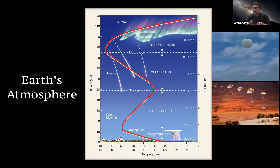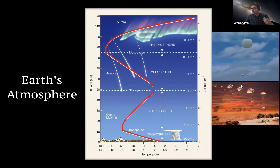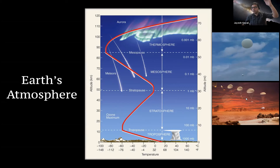For Earth, we have the luxury of launching radiosondes — attaching an instrument that gets direct measurements of the atmosphere. For solar system planets, like Titan with the Huygens mission, we can launch a spacecraft and drop a probe into the atmosphere to get the vertical structure. Using this vertical structure, we can learn a lot about these atmospheres.